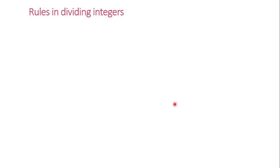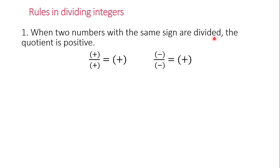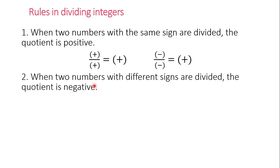How about the rules in dividing integers? As you have seen on the diagram, the same rules apply as for multiplying integers. Dividing numbers with the same sign, the quotient is always positive — positive divided by positive is positive, negative divided by negative is always positive. Second, when two numbers with different signs are divided, the quotient is negative. Positive divided by negative is negative; vice versa, negative divided by positive is always negative.